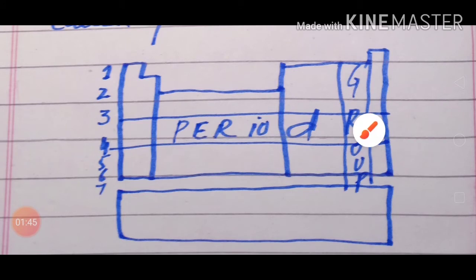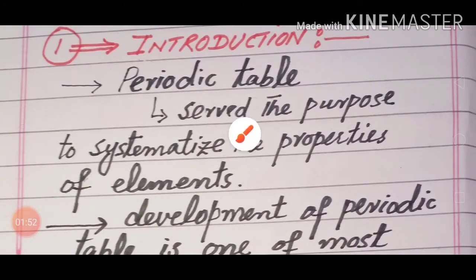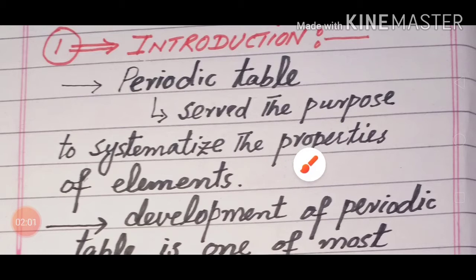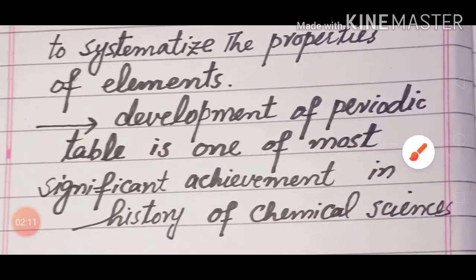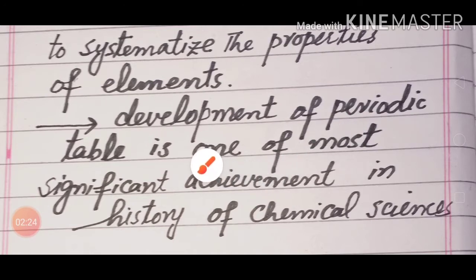So we are discussing this. The Periodic Table serves the purpose to systematize the properties of elements. The Periodic Table presented the properties of elements in an organized manner. The development of the Periodic Table was one of the most significant achievements in the history of chemical sciences — a very great accomplishment.